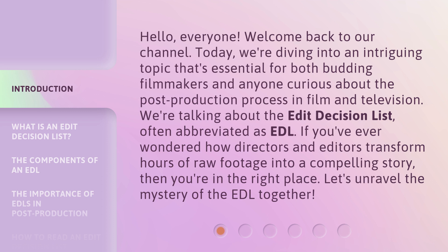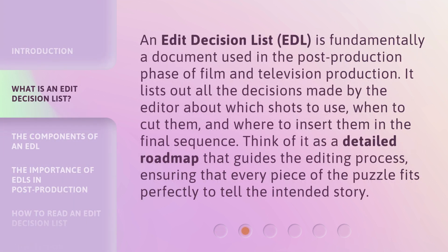Let's unravel the mystery of the EDL together. An Edit Decision List, or EDL, is fundamentally a document used in the post-production phase of film and television production. It lists out all the decisions made by the editor about which shots to use, when to cut them, and where to insert them in the final sequence. Think of it as a detailed roadmap that guides the editing process, ensuring that every piece of the puzzle fits perfectly to tell the intended story.